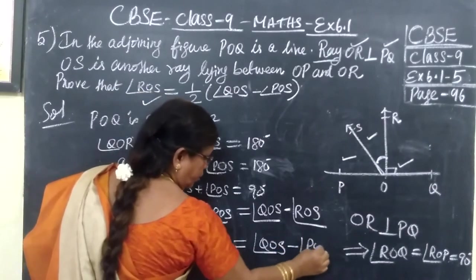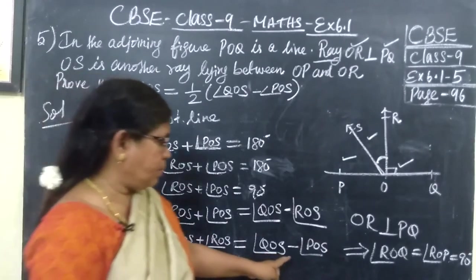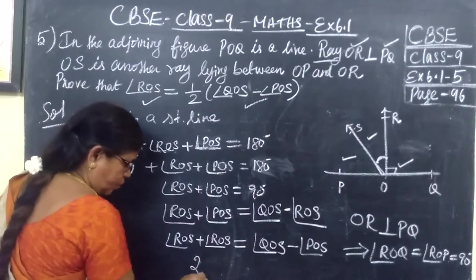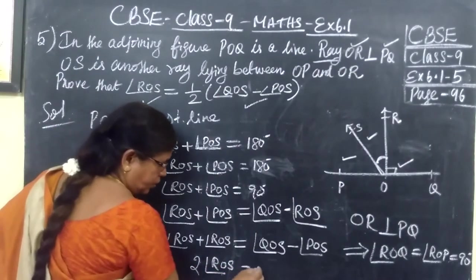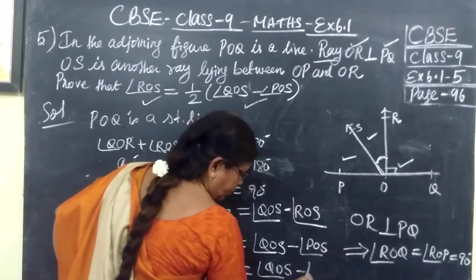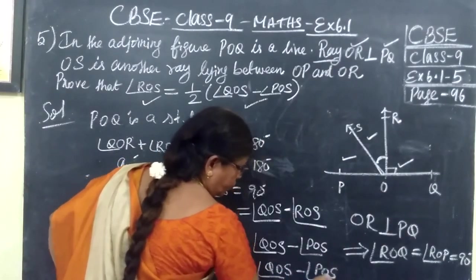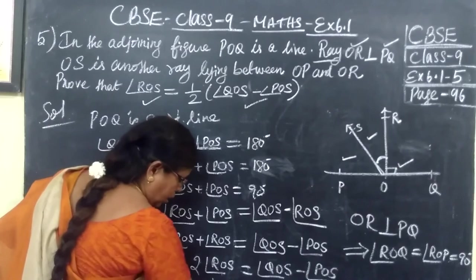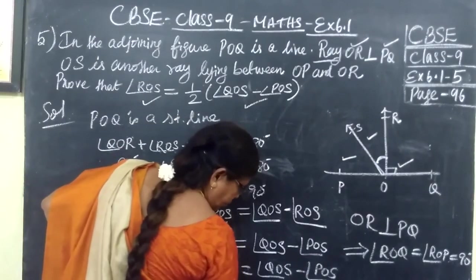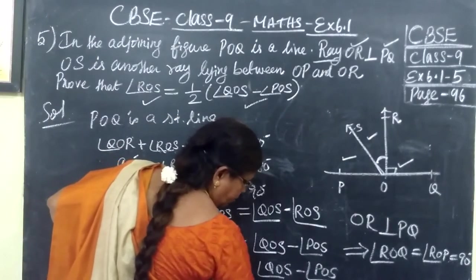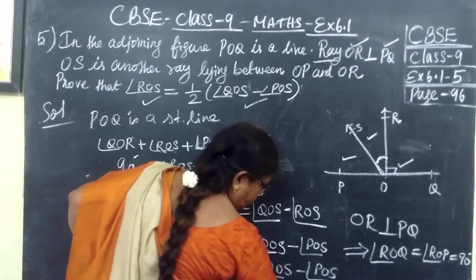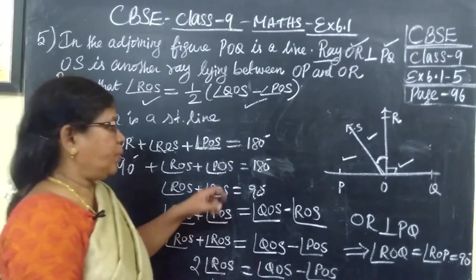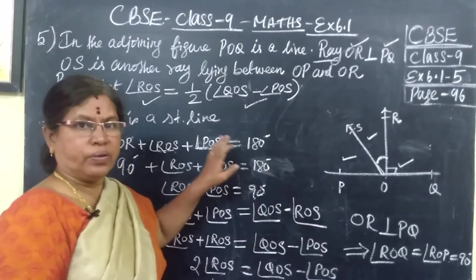So ROS plus ROS equals angle QOS. This POS, take it to that side. Therefore, plus POS becomes minus POS, because according to the result we are writing this. So 2 ROS equals angle QOS minus angle POS. This is a very simple sum. In this sum we have used the property: sum of adjacent angles equals 180 degrees.